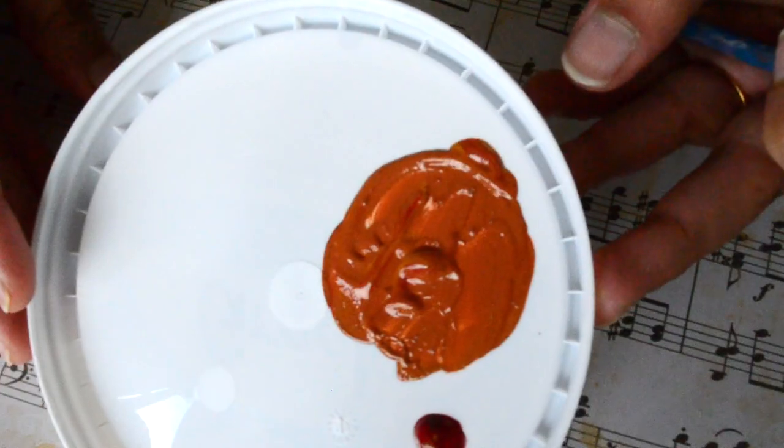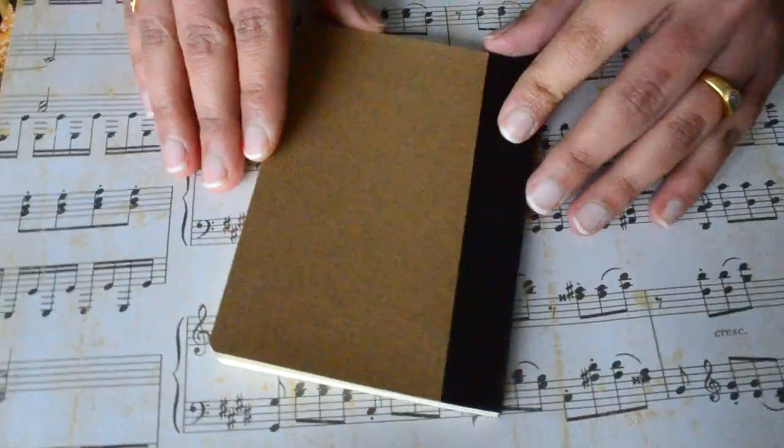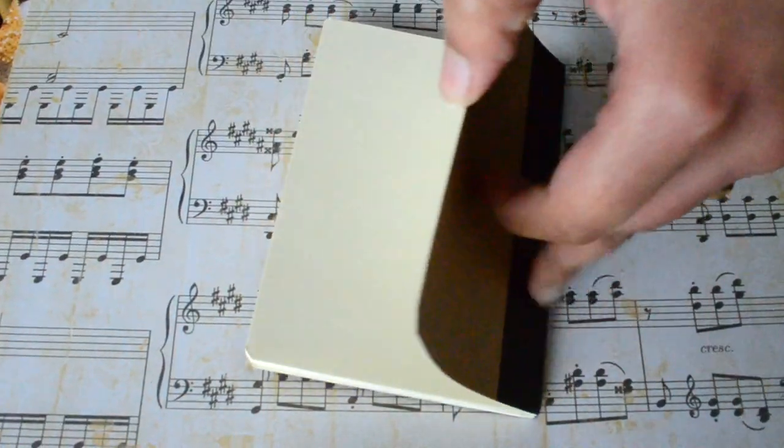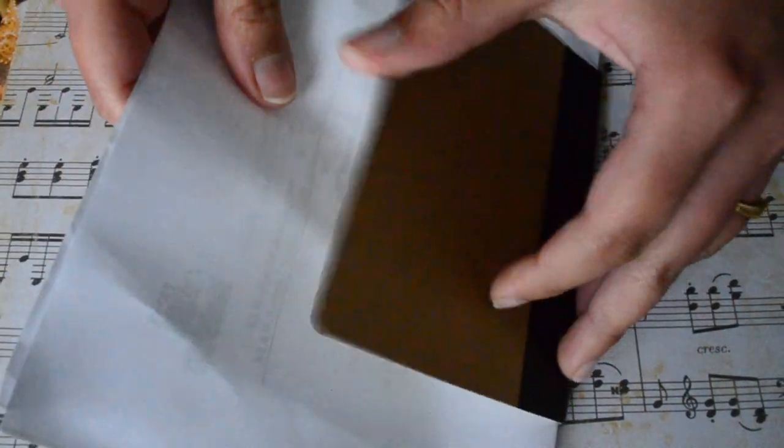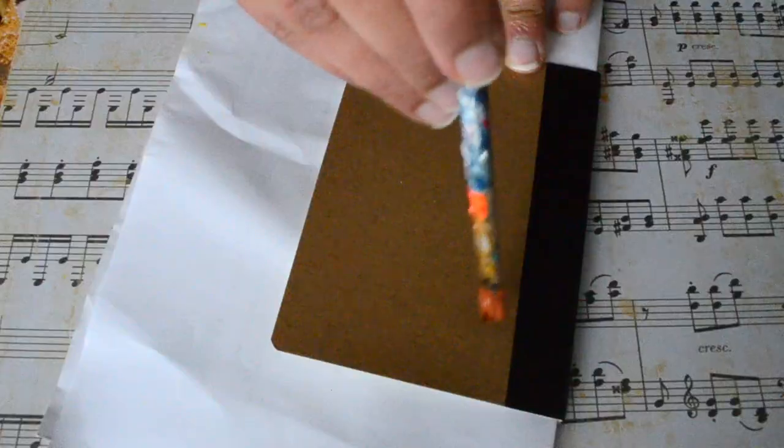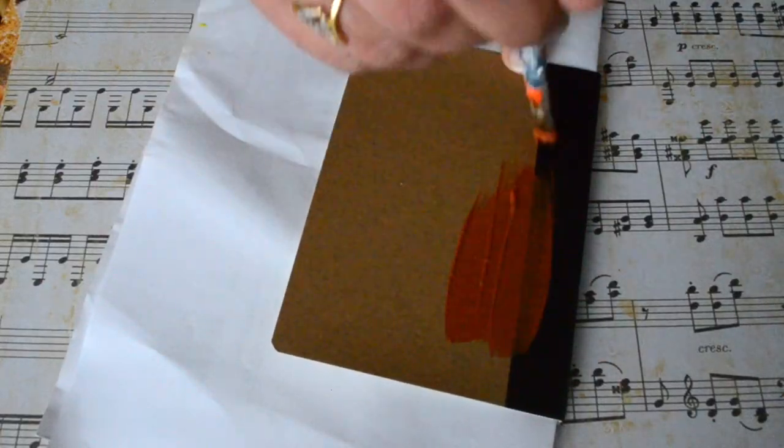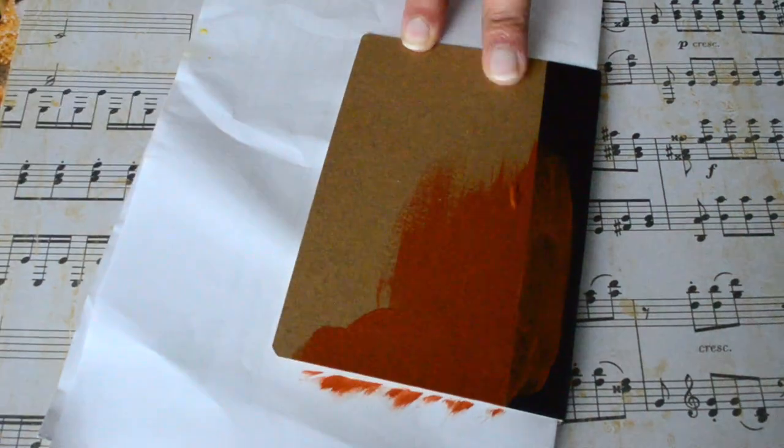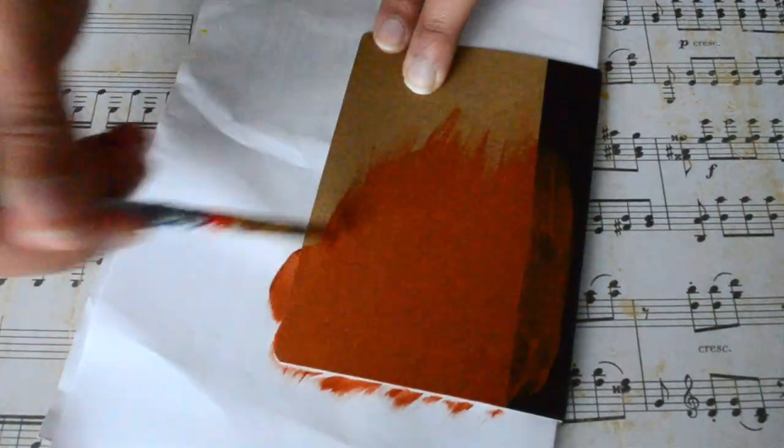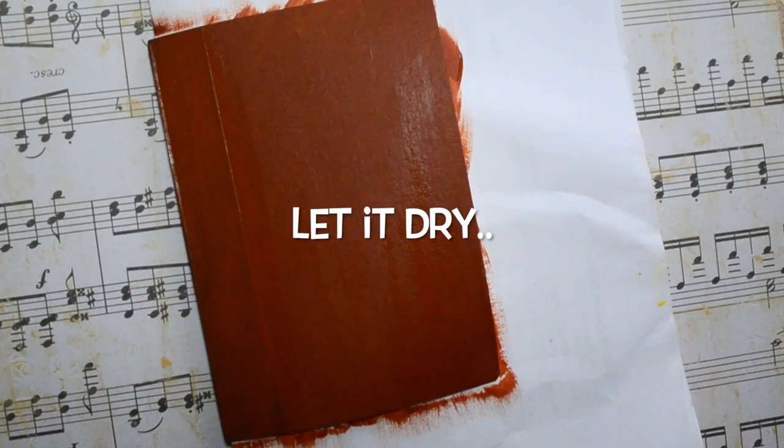Once I'm happy with my shade, I'll start painting. But first I'll insert a rough paper inside the notebook cover so that we don't get any paint leaking into the papers. Then I'll paint two coats of terracotta color which we just made onto the notebook cover and let it dry.